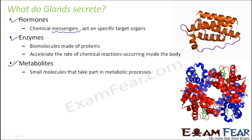The third thing secreted by glands is metabolites — small molecules that take part in metabolic processes. Metabolism refers to all the life-sustaining chemical processes taking place inside cells of living organisms, such as digestion, excretion, respiration, and circulation — processes without which an organism cannot live. Metabolites are substances that take part in these metabolic processes. Examples include alcohols, amino acids, organic acids, and vitamins. These are some of the important things secreted by glands, and they play a very important role in life processes inside our body.